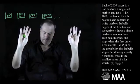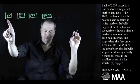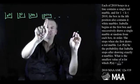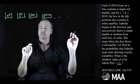So what does Isabella do? Isabella begins at the first box and successfully draws a single marble at random from each box in order. So she's going to go along and take a marble from each box, and she does this when she first draws a red marble.